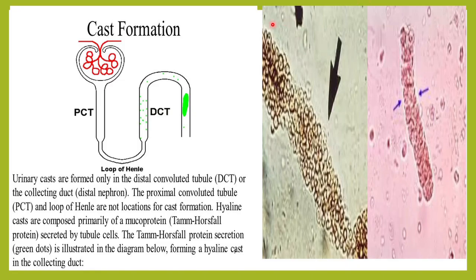Welcome to Classes by Lab Doctor. Today let us study about the hyaline cast. A cast is nothing but a mold — it takes the shape of the structure or tubule where it is formed. The area in the nephron where cast formation takes place is the distal convoluted tubule and the collecting duct. When you see a cast, it indicates it was formed in the kidney, not in the urinary bladder or urethra.